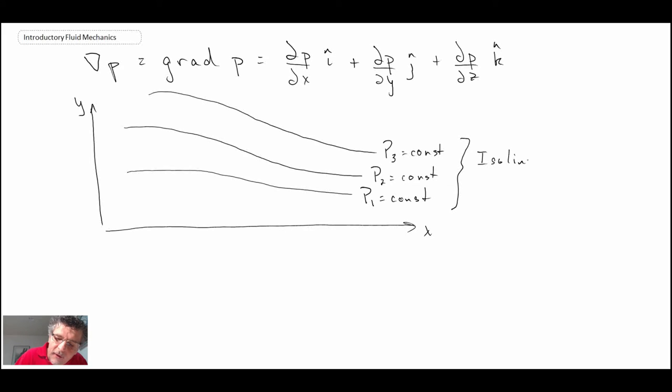And these are iso lines of pressure. If we're dealing with temperature, those would be isotherms. Theoretically it should be isobar for constant pressure. And we're going to assume that P3 is greater than P2 is greater than P1.